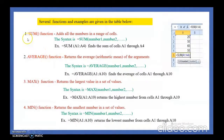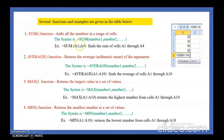Today's first function is the SUM function. It is used to add all the numbers in a range of cells. How to use it: type equal to SUM, then open bracket, then the starting cell address, then colon, then the last cell address, then close bracket, and press Enter. You will get the sum of all numbers from the starting to the ending cell address.